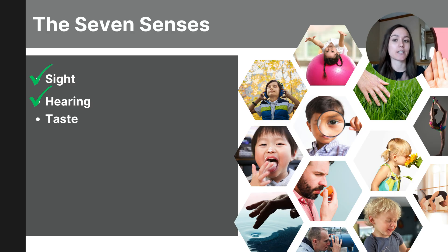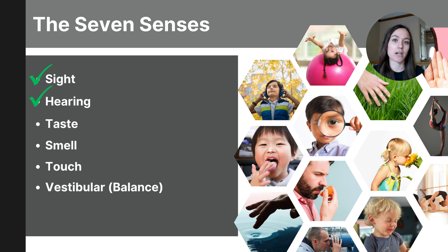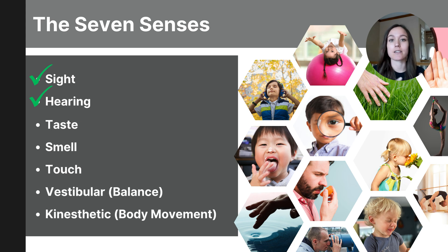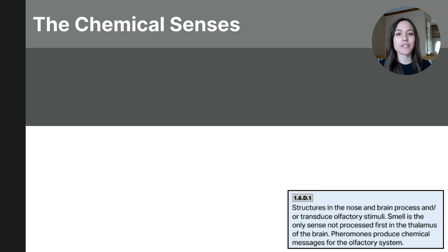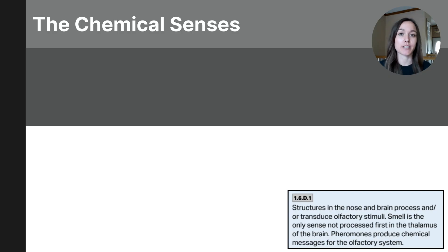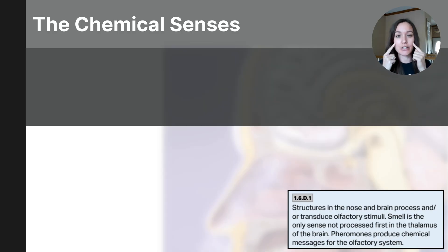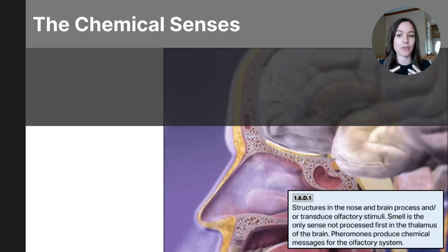The remaining sensory systems include taste, smell, and touch, as well as the vestibular sense and the kinesthetic sense. Together, these make up the seven sensory systems that detect information from our environment. First, let's start with the chemical senses. We have two chemical senses that detect molecules in our environment — this happens in our nose and in our mouth.